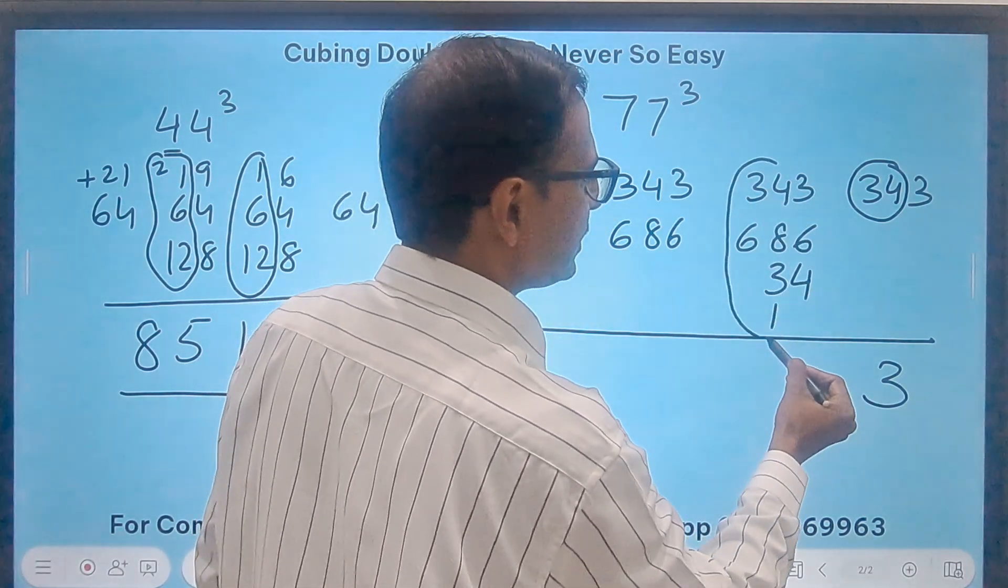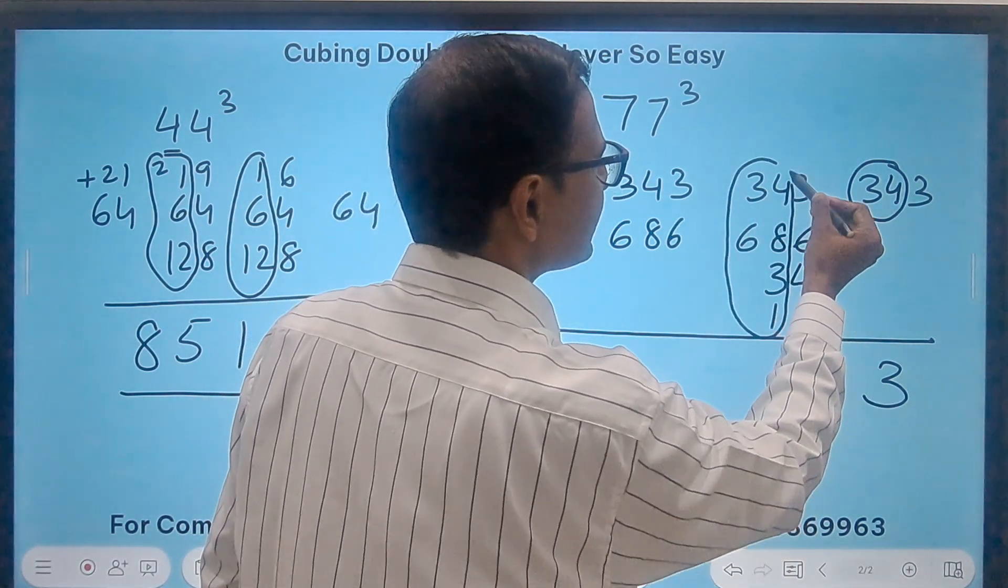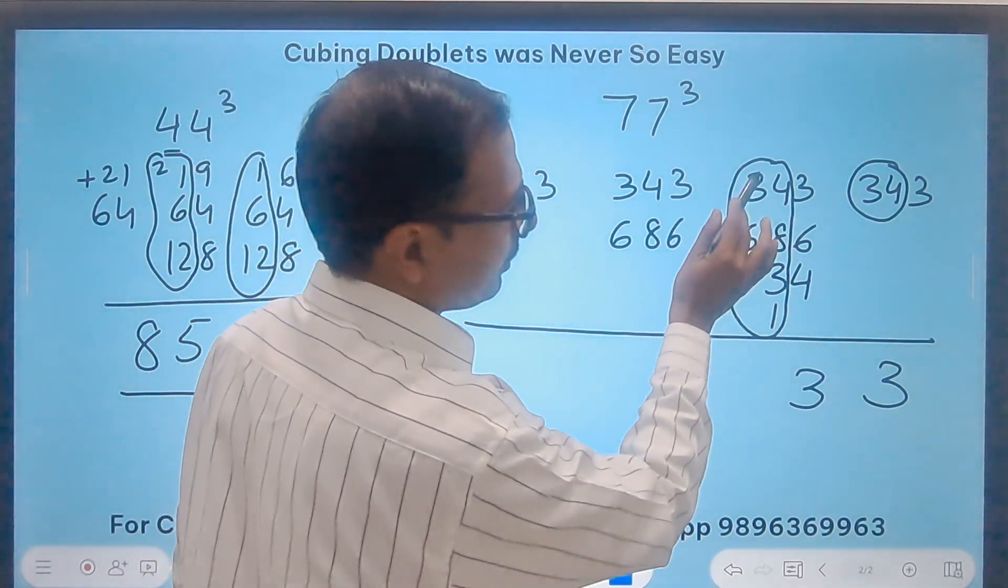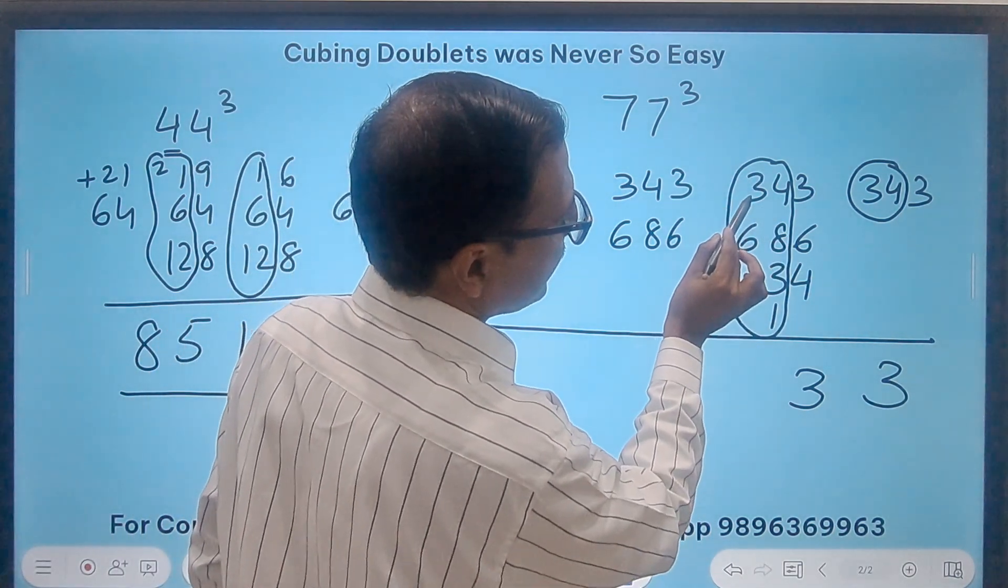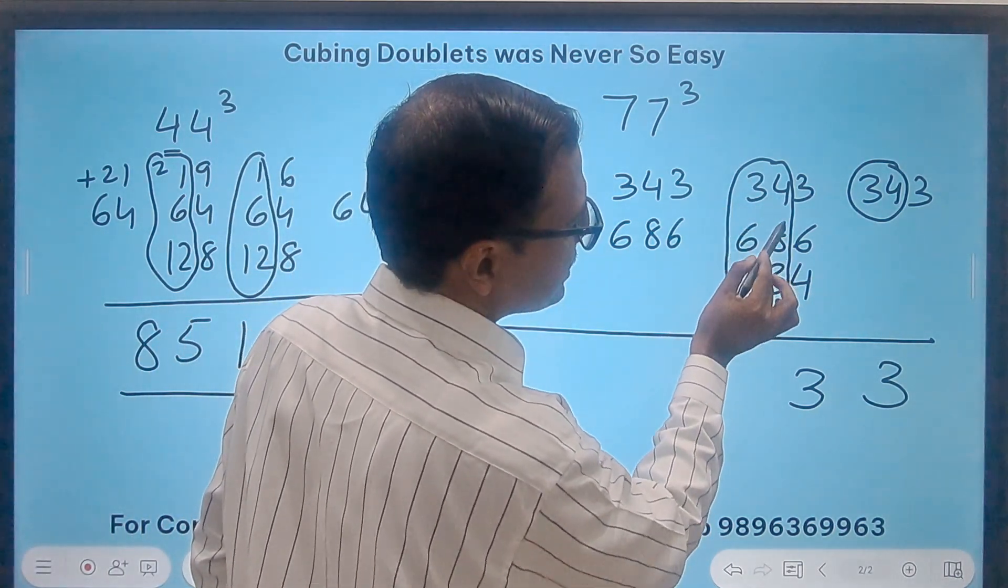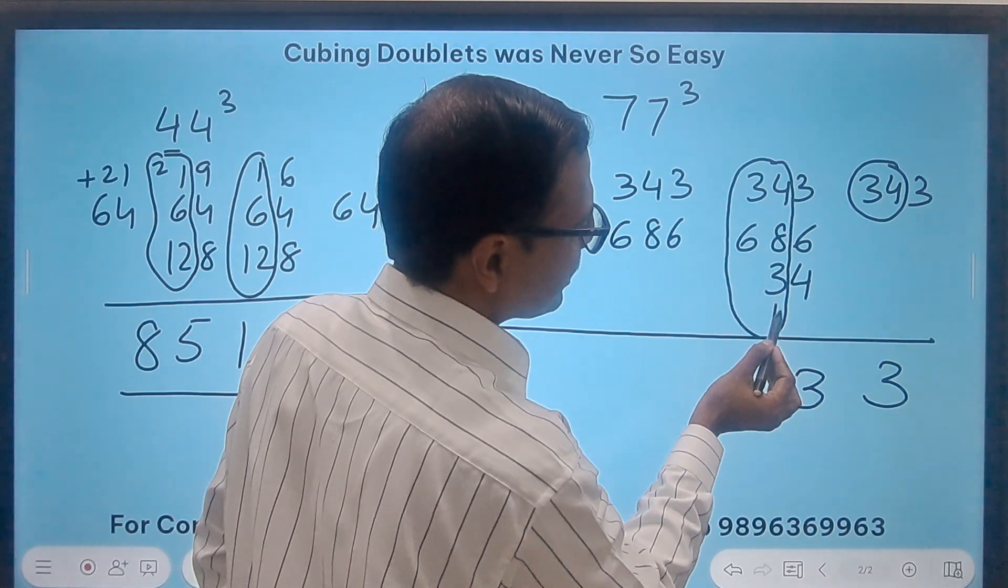Now this part is to be carried forward to the next step. So how much is this? 60, 30, 90, 90 and 12 is 102, 105, 106.